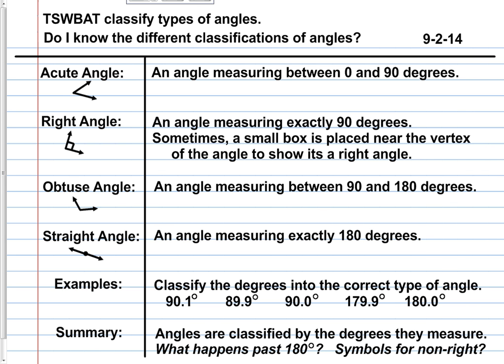The next one is the essential question. Do I know the different classifications of angles? That's going to be the question that you ask yourself at the end of the notes and the end of the assignment before you walk away from this lesson. Do you know that? If you do not, more studying is needed. If you got it, you got it. Now, as you can see, notes were taken and we have four different types of angles.